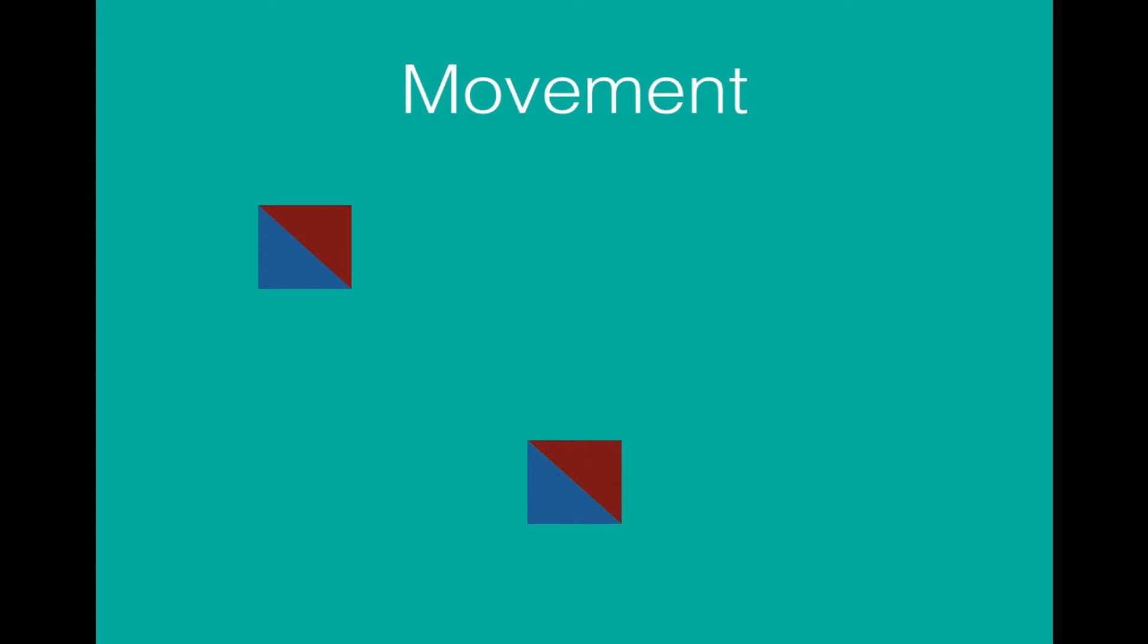We're going to now look through those different characteristics one by one, and the first one is movement. Movement can be a change in place, so moving from A to B.